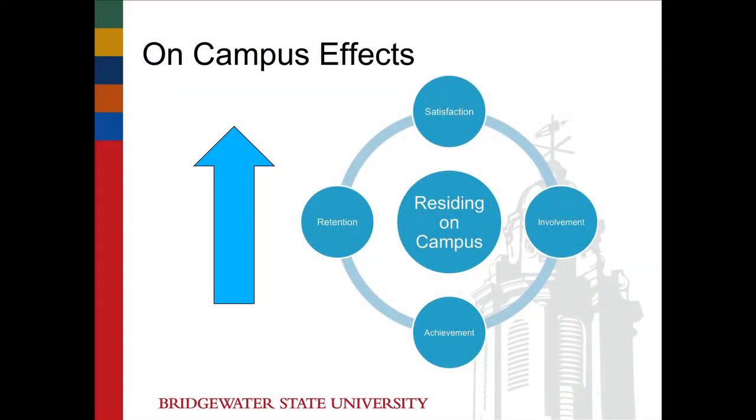There are many types of extracurricular activities which a student may partake in on campus, so it's unclear whether one particular type of involvement has more significant effects than others. However, Astin has found that any type of involvement is very significant to learning and student development. Along with more involvement in extracurricular activities, there seems to be a positive correlation between involved students and residing on campus. Astin found that students who resided on campus were a lot more likely to be satisfied with the overall undergraduate experience.